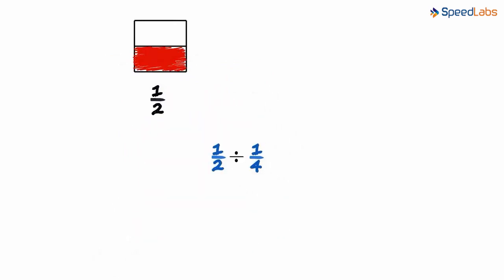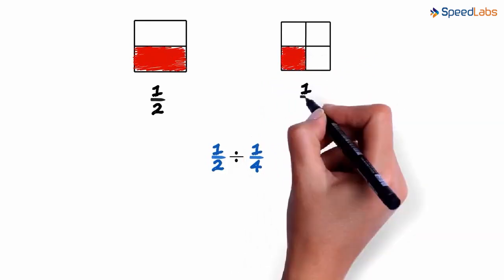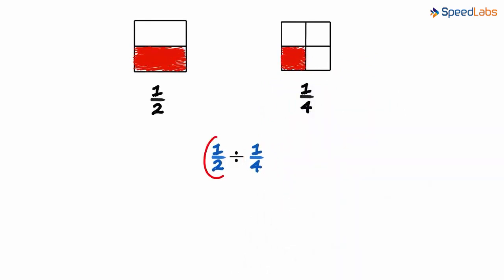Now let us draw a square divided into four equal parts. To represent one by four, we color just one part out of the four. This can be written as one divided by four. So one by two divided by one by four in words can be read as, how many one by fours do we need to make one by two or a half?